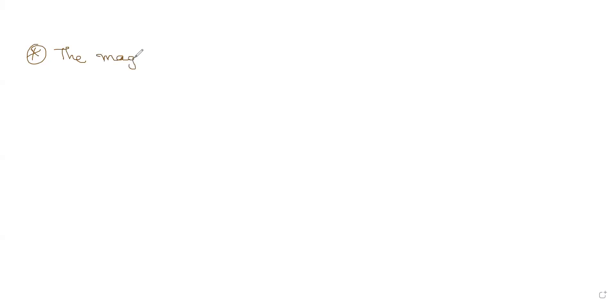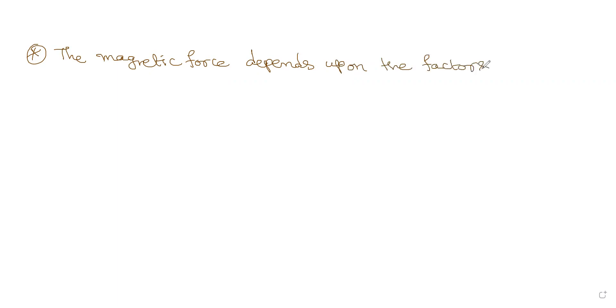Now we have a very fundamental thing we have to see — the magnetic force depends upon the factors B, q, and v. It depends upon the magnetic field, the charge of the particle, and the velocity of the particle — all three.